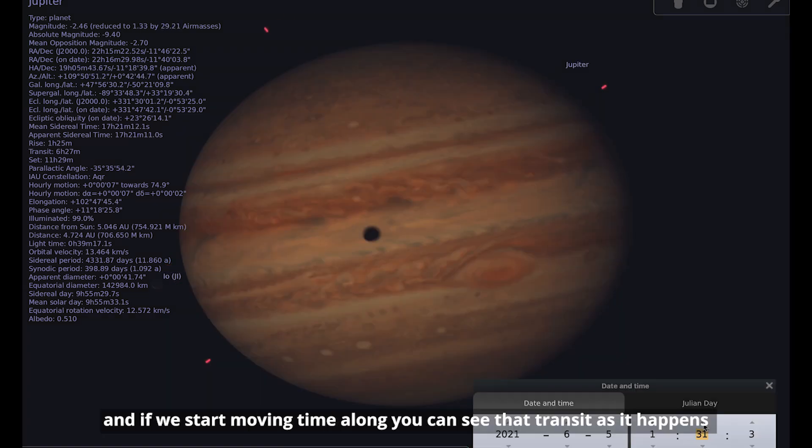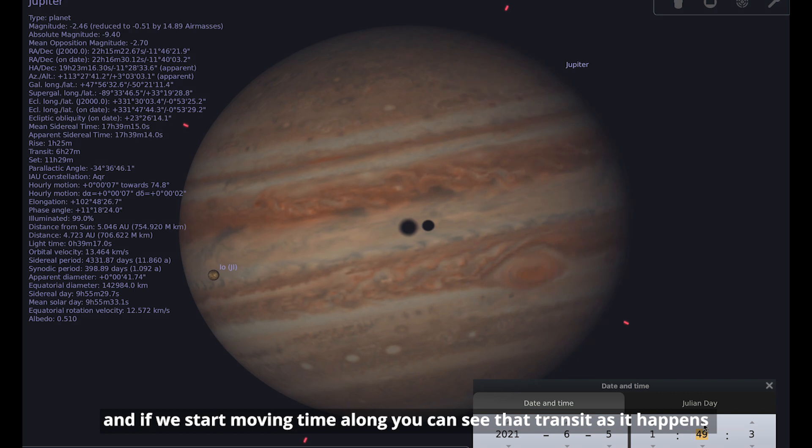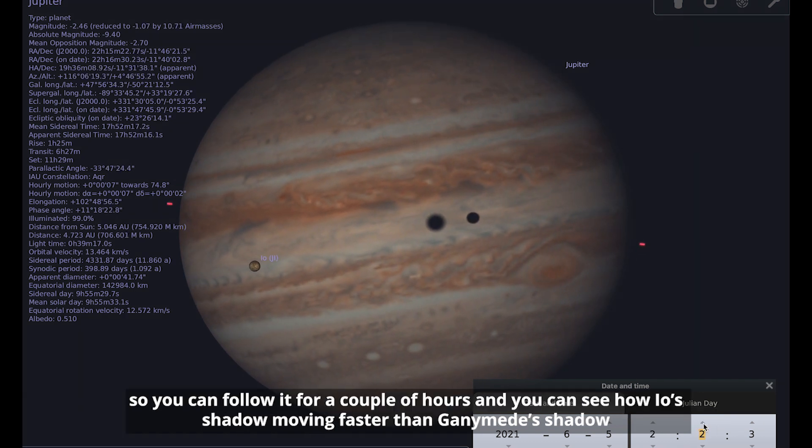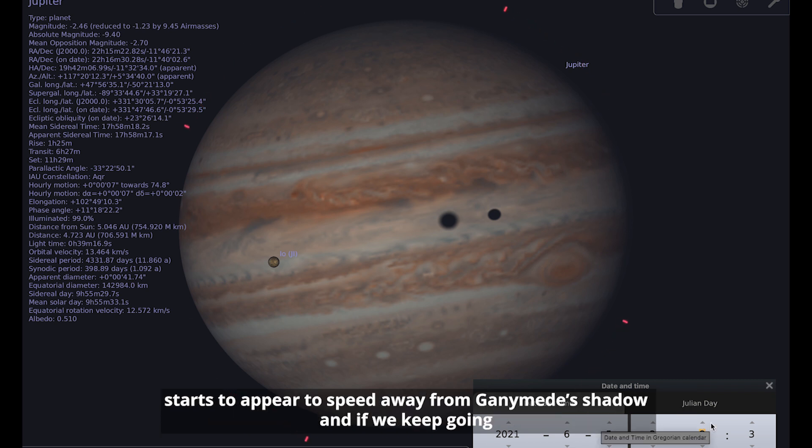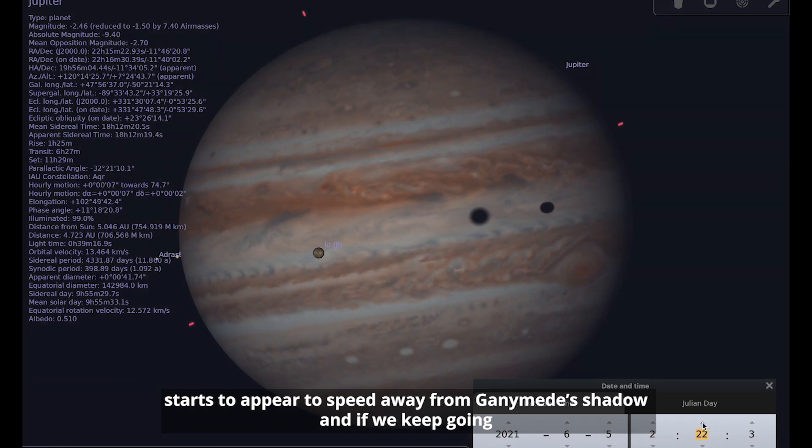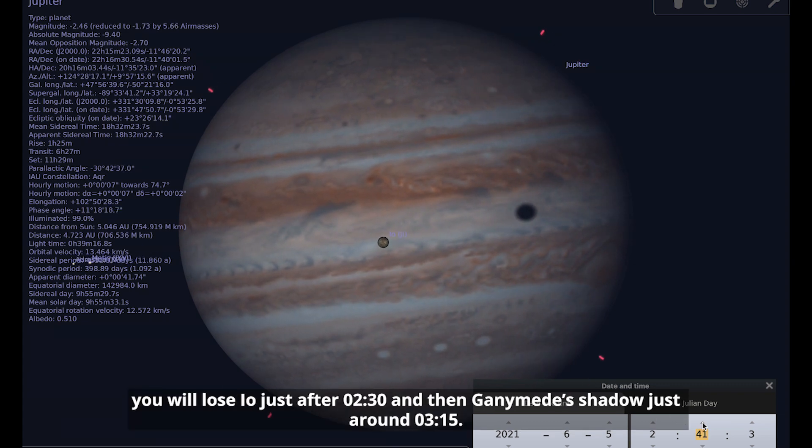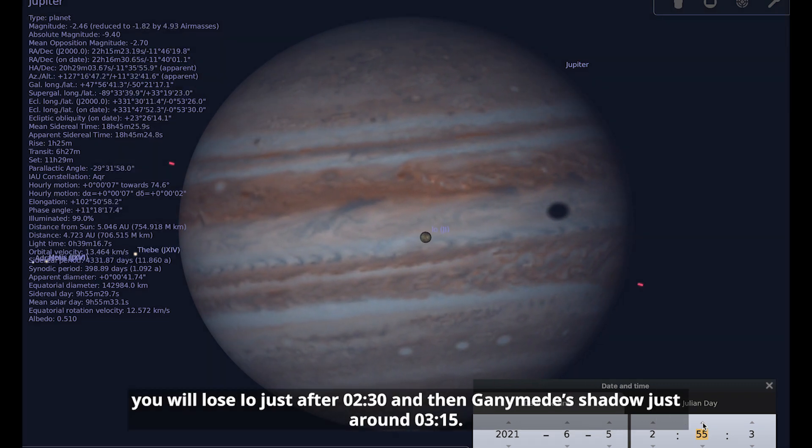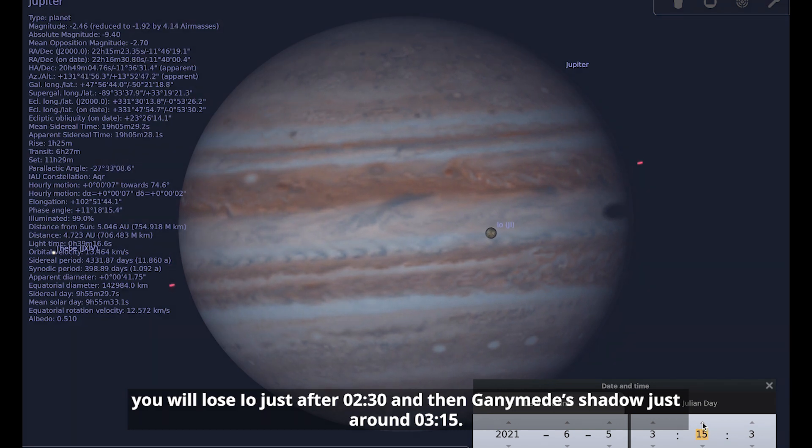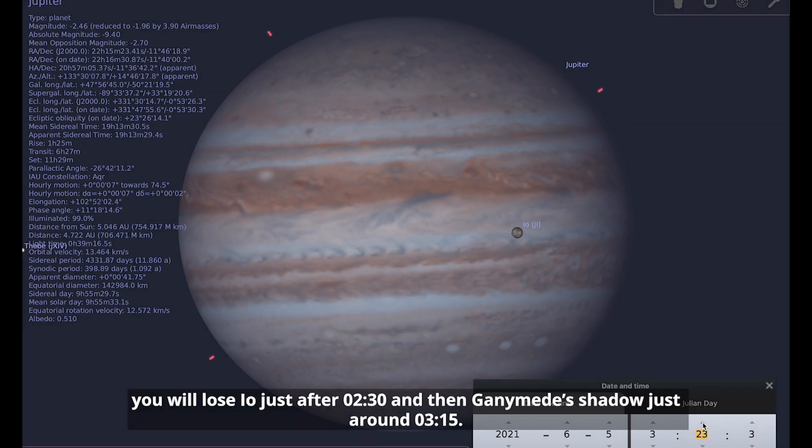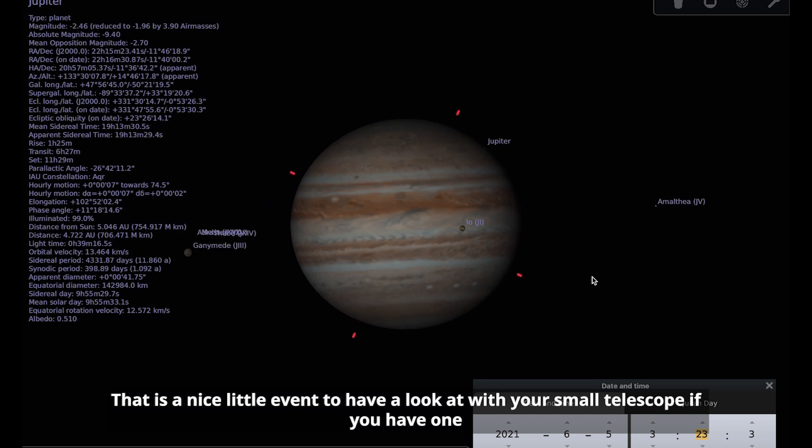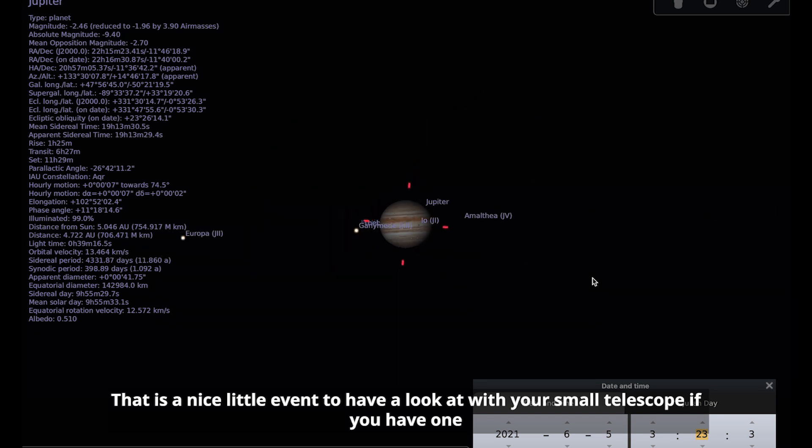Their shadows are transiting across the surface of the planet and we've actually got both the shadows coinciding with each other as Jupiter rises on the morning of the 5th. If we start moving time along, you can see that transit as it happens. You can follow it for a couple of hours and you can see how Io's shadow, moving faster than Ganymede's shadow, starts to appear to speed away. You will lose Io's shadow just after half past two and then Ganymede's shadow just around quarter past three.